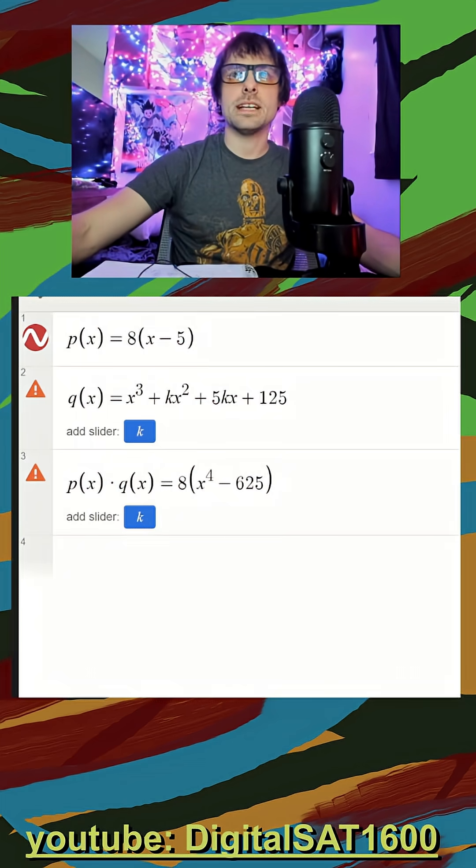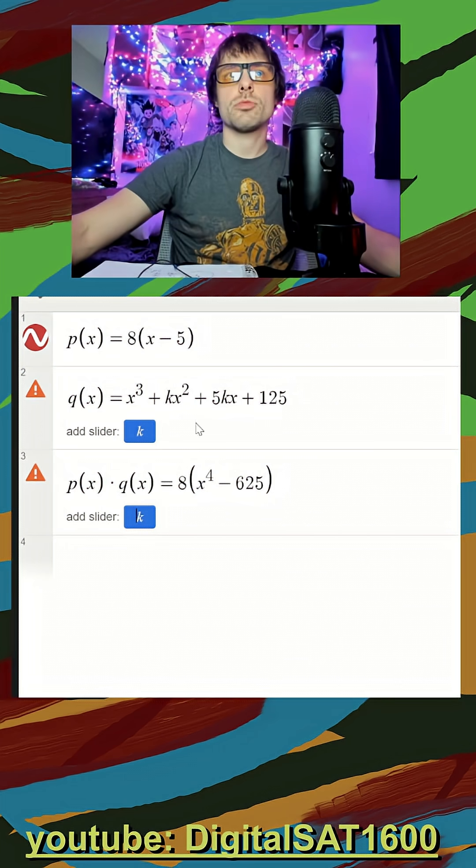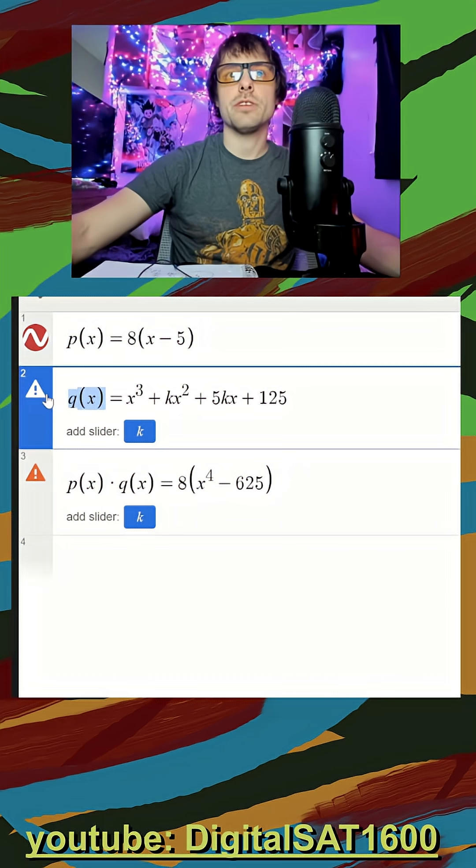So, I'm already pulling up Desmos, and I have our three formulas plugged in here. We have our p of x, our q of x, and then our p times q gets us this.